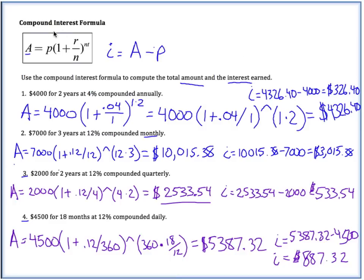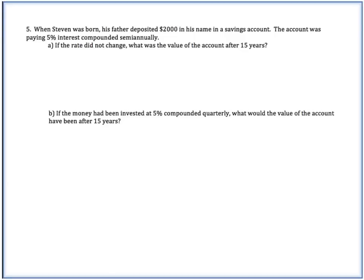So that's how to use the compound interest formula to find the total amount and the interest earned. All right, next I want you to try number five on your own. And it's just a little word problem. See if you can figure out what you need to do to find the value of the account under the two different circumstances here. So go ahead and try that out, bring your answers to class, and we'll go over it then.